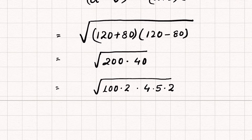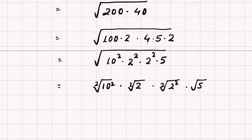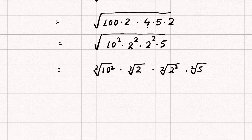We can rewrite 100 as 10², and 2 × 2 as 2², and 4 as 2². So the expression becomes √(10²) × √(2²) × √(2²) × √5.